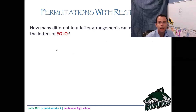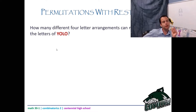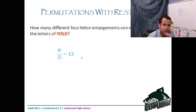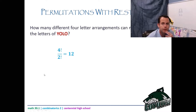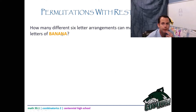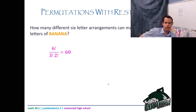YOLO: I have four letters, so that's 4 factorial. But I have two O's that are the same, so I divide by 2 factorial. Four factorial divided by 2 factorial equals 12. Banana: I have six letters, but I have three A's and two N's. So I end up with 6 factorial divided by 3 factorial times 2 factorial, which is 60.